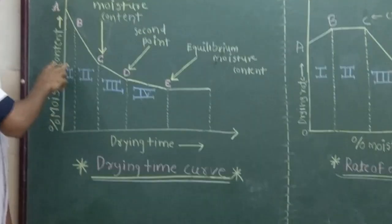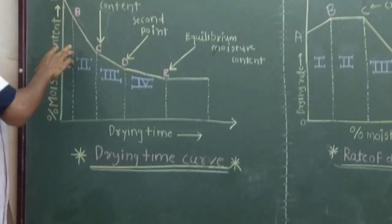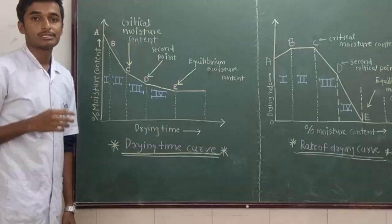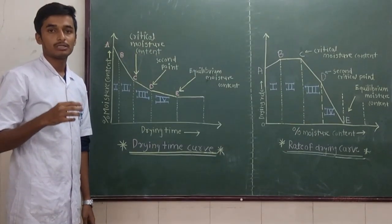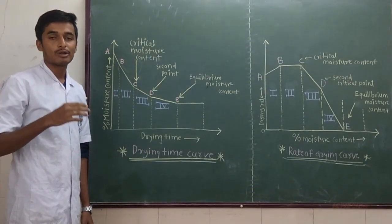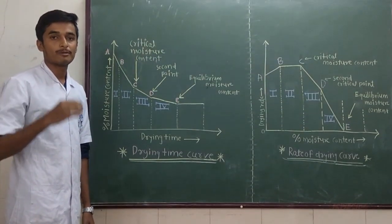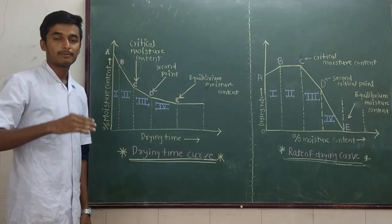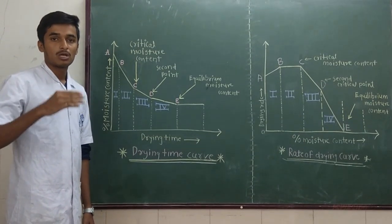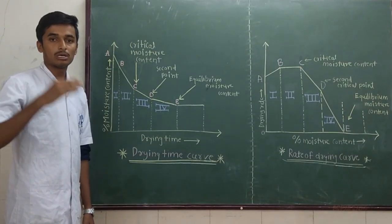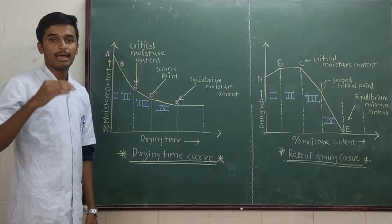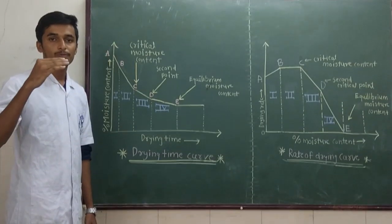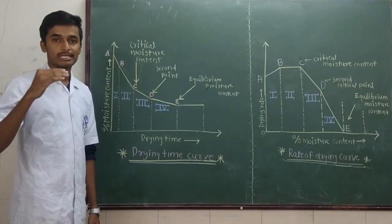This period is also called the unsteady state in drying. In this period, vaporization of inner moisture takes place and moisture comes to the surface. Heat transfer occurs to the wet solid, and mass transfer takes place from the inner region to the surface of the wet solid.